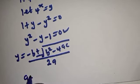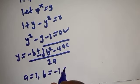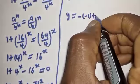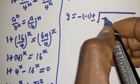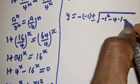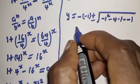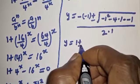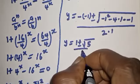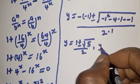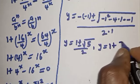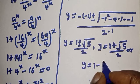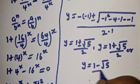Where a is equal to 1, b is equal to minus 1, and c is equal to minus 1. Substituting: y equals minus (minus 1) plus or minus square root of (minus 1) squared minus 4(1)(minus 1), over 2(1). This gives y is equal to 1 plus or minus square root of 5, over 2. So y equals (1 plus root 5) over 2, or y equals (1 minus root 5) over 2.